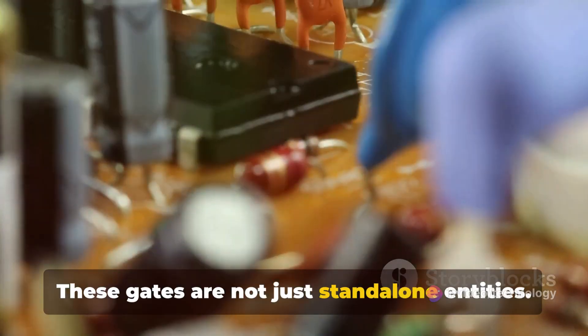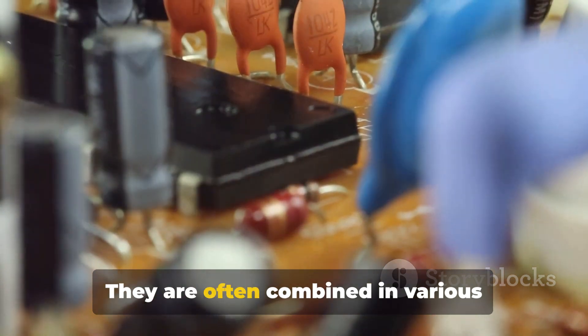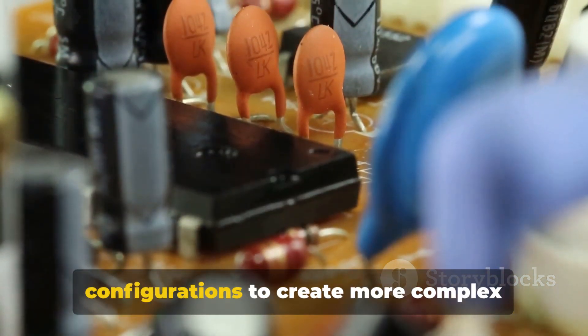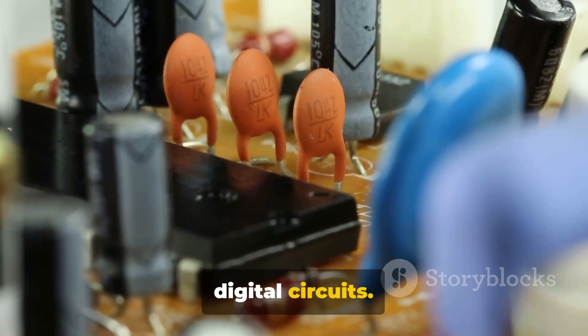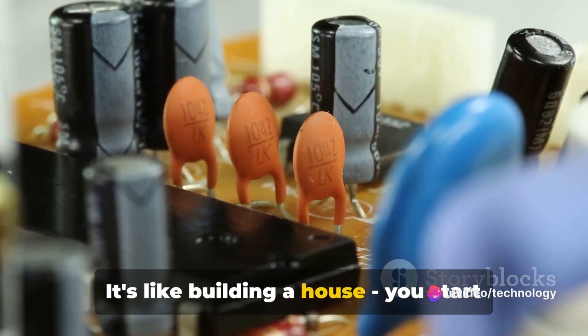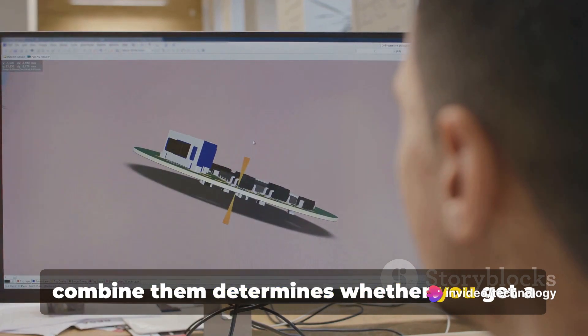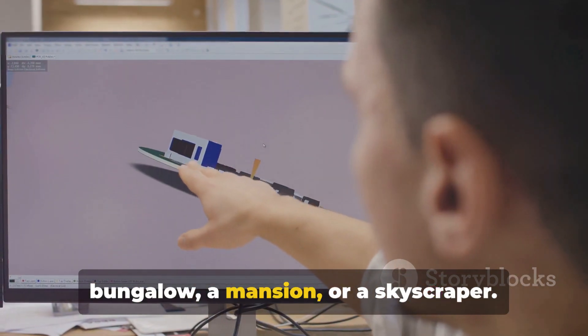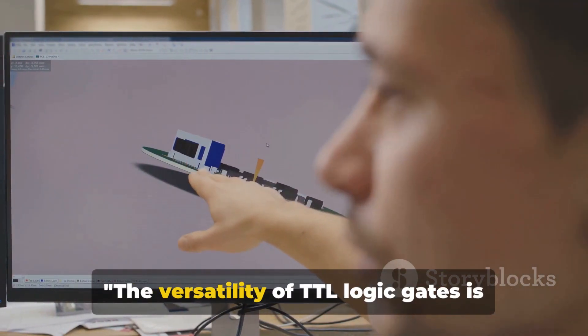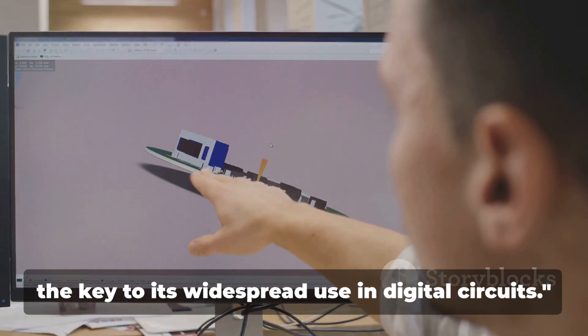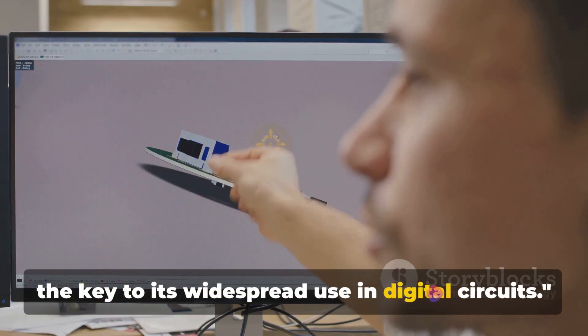These gates are not just standalone entities. They are often combined in various configurations to create more complex digital circuits. It's like building a house. You start with bricks, cement, and wood, but how you combine them determines whether you get a bungalow, a mansion, or a skyscraper. The versatility of TTL logic gates is the key to its widespread use in digital circuits.